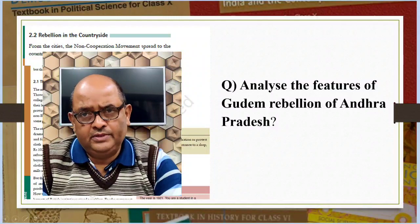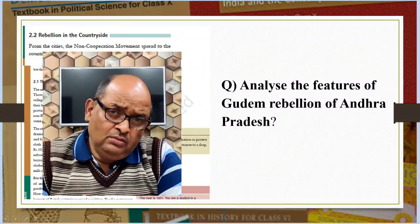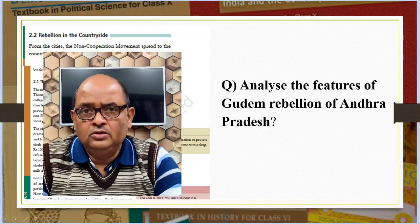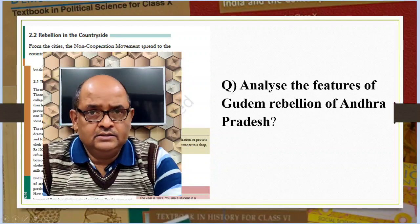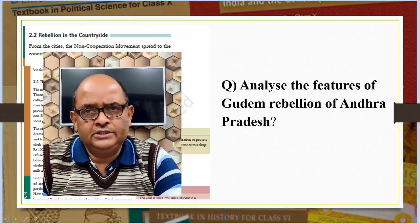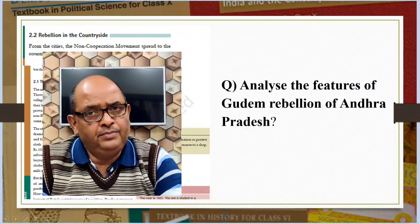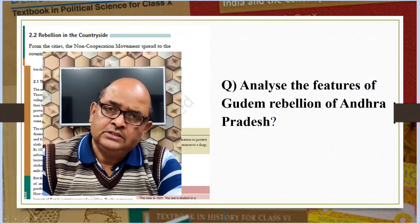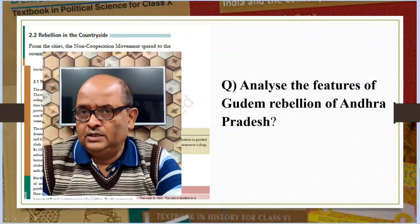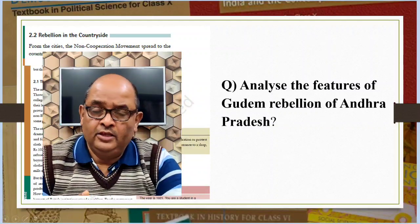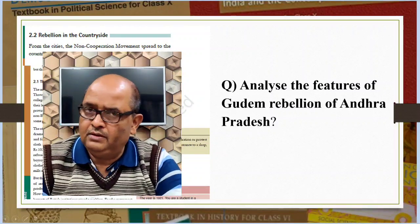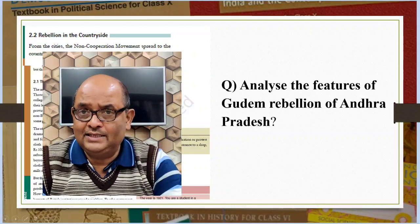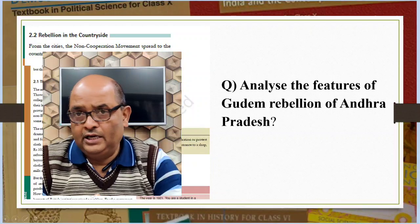Analyze the features of the Gudam Rebellion of Andhra Pradesh. In the Gudam Hills of Andhra Pradesh, the colonial government had closed the entry of people to the forests to graze their cattle or to collect fruit and firewood. This enraged the hill people. When the government began forcing them to contribute begar for road building, the hill people revolted. The revolt spread in the early 1920s under the leadership of Alluri Sitaram Raju. The rebels proclaimed that he was an incarnation of God, as he had a variety of special powers — he could make correct astrological predictions and heal people. Raju talked about the greatness of Mahatma Gandhi and was inspired by the non-cooperation movement, but at the same time asserted that India could be liberated only by the use of force and not non-violence.